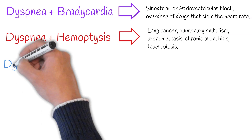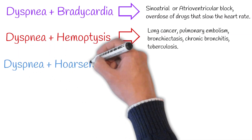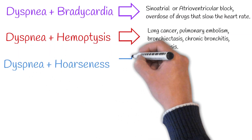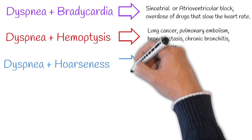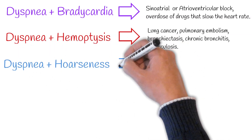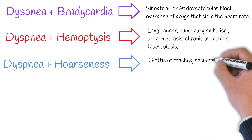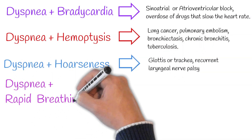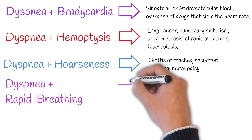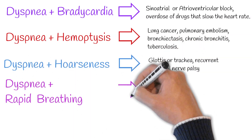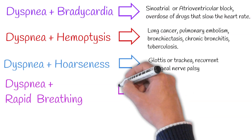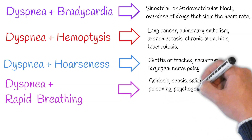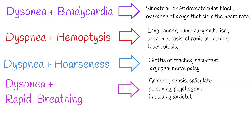Hoarseness combined with dyspnea can indicate disease of the glottis or trachea, or recurrent laryngeal nerve palsy. Rapid or deep breathing with difficulty breathing can be a sign of acidosis, sepsis, salicylate poisoning, or psychogenic causes including anxiety.